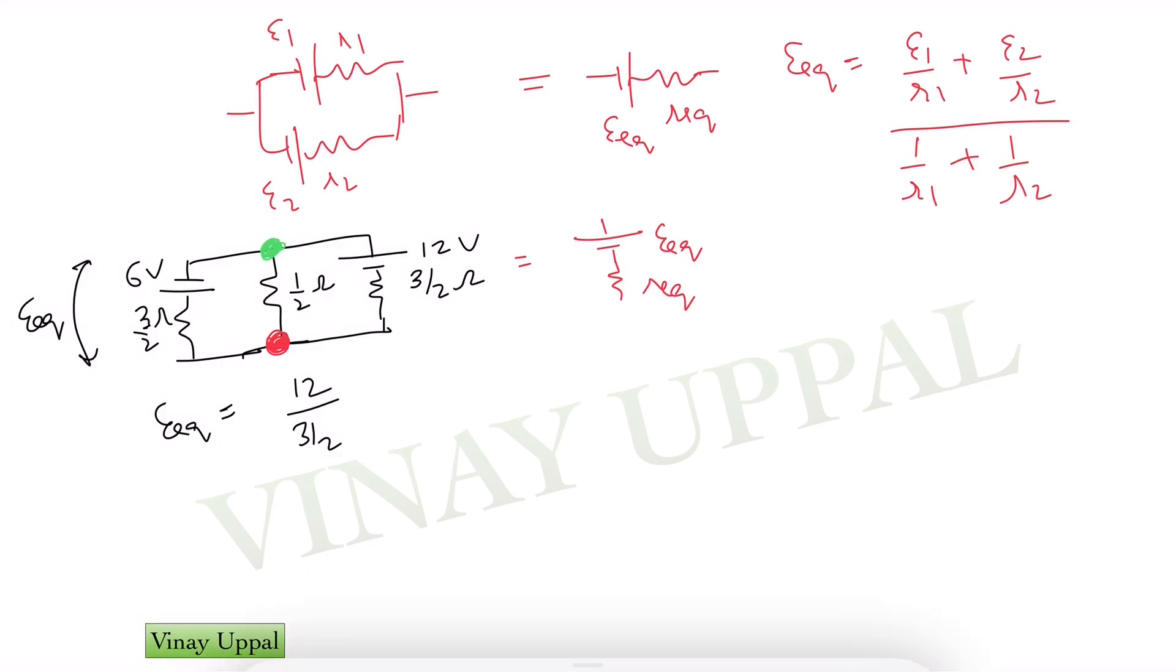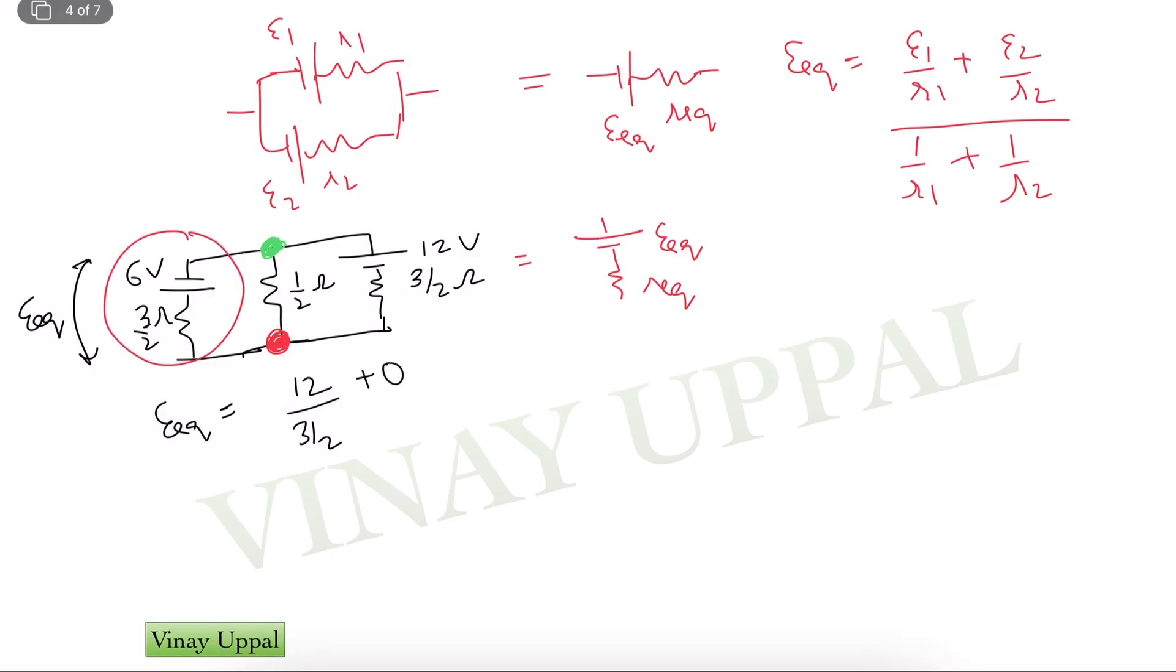Now the crucial point here is to treat this middle branch. And this is the best part of this method: the middle branch should be treated as a battery of 0 EMF. And therefore, now I am going to write for the middle branch, I am going to write E2 by R2 plus E3 by R3. So we have assumed the polarity in this manner. And 6V polarity is opposite, so we will have a negative sign. So minus 6 divided by 3 by 2 divided by 1 by R1 plus 1 by R2 plus 1 by R3 for the leftmost branch.